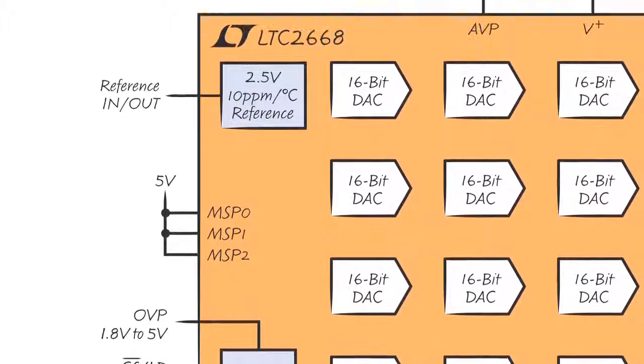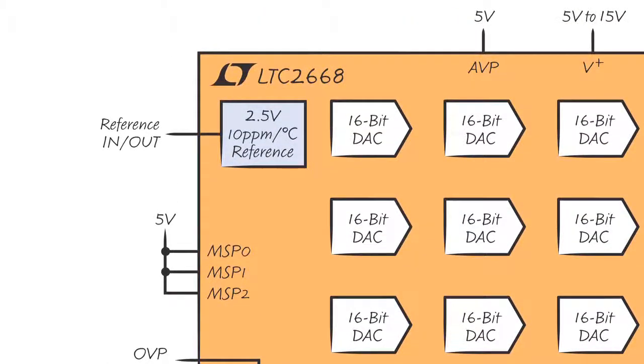A good DAC needs a good reference, and that's built in too. The LTC2668's internal 2.5V reference has a guaranteed accuracy of 0.2% and a guaranteed temperature coefficient of 10 parts per million per degree Celsius. The reference can be shared with other circuits when appropriately buffered.